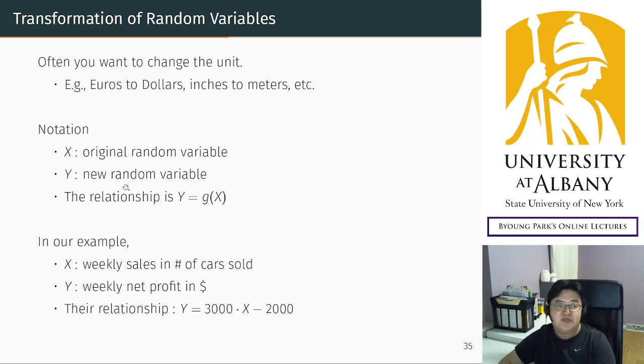And Y is the new random variable. In our example, it's the net profit generated by the agent in a week. In general, we may write the relationship this way: Y equals a function g of the original variable X. If you input an original variable, the output is a new random variable. Relabeling, changing the original variable into a new random variable.